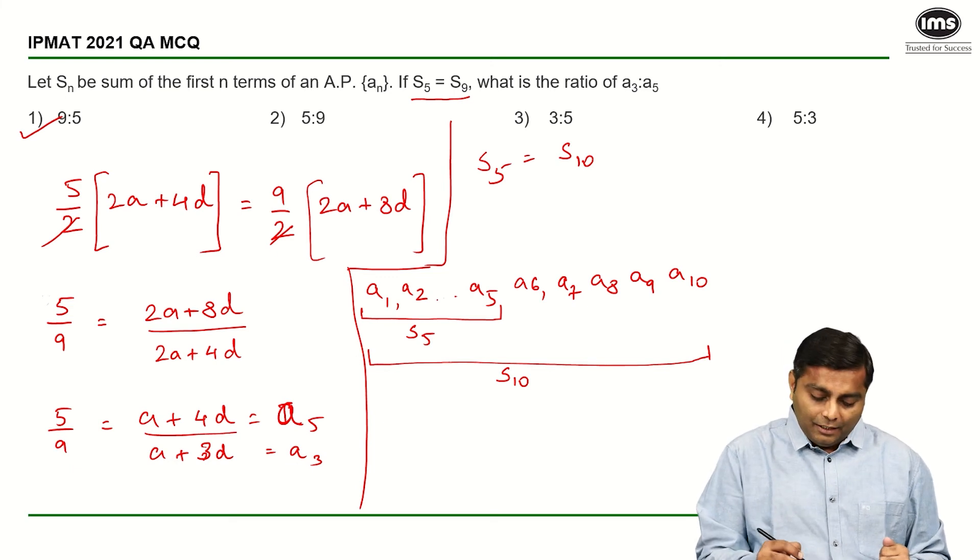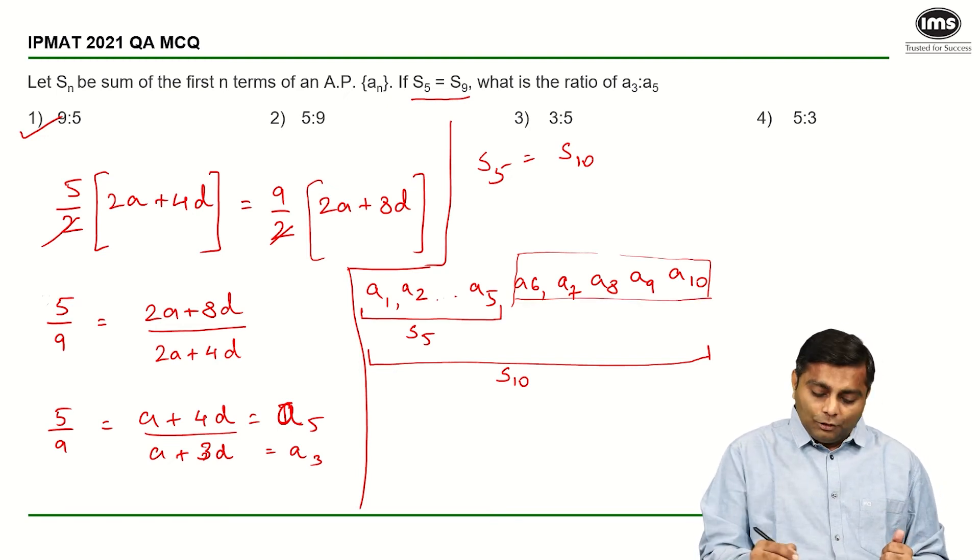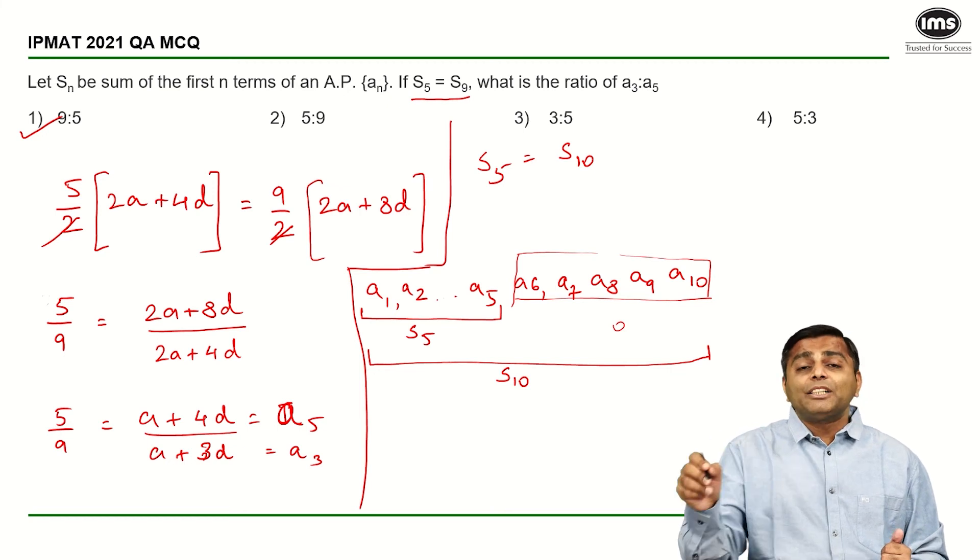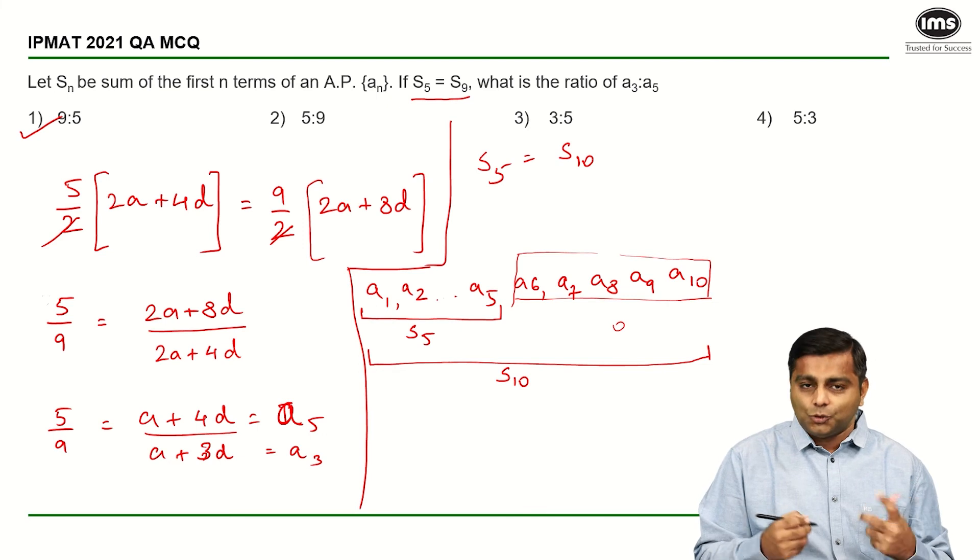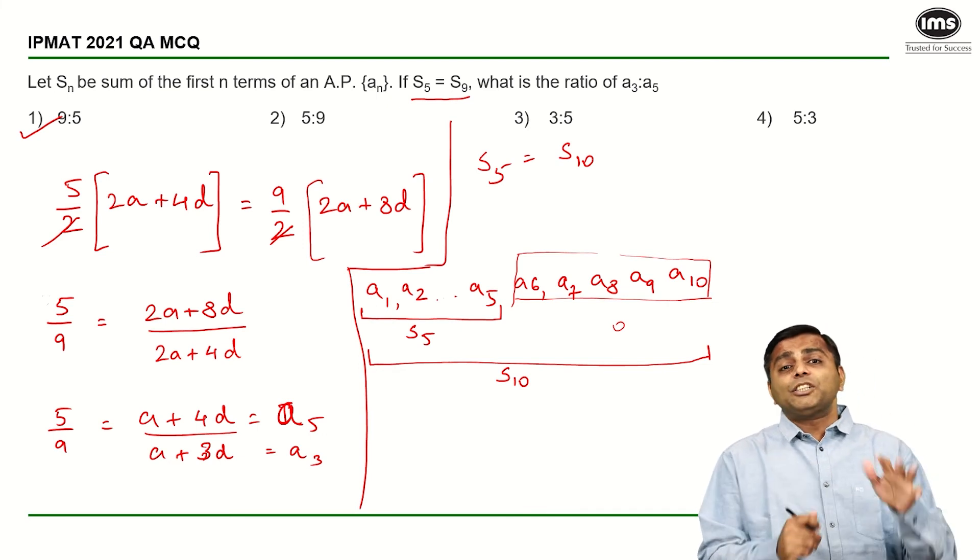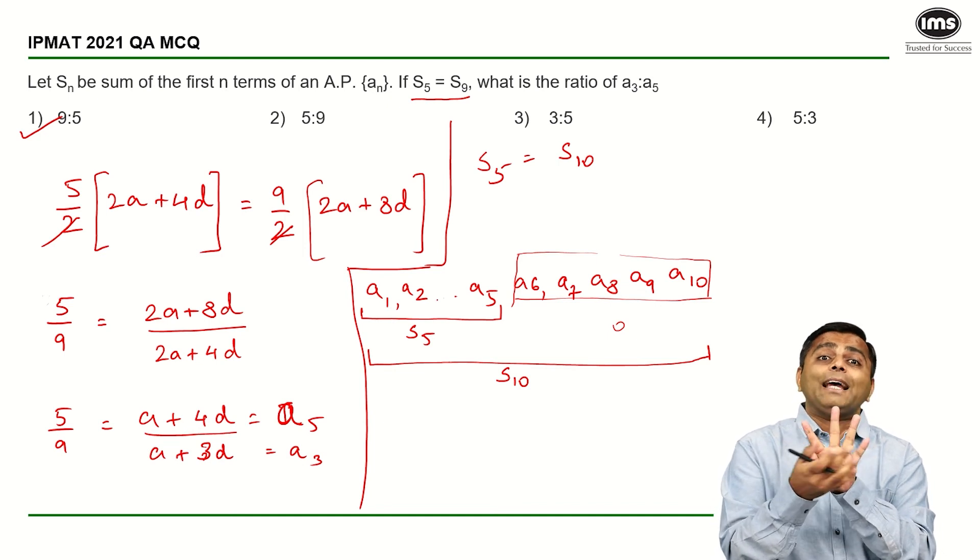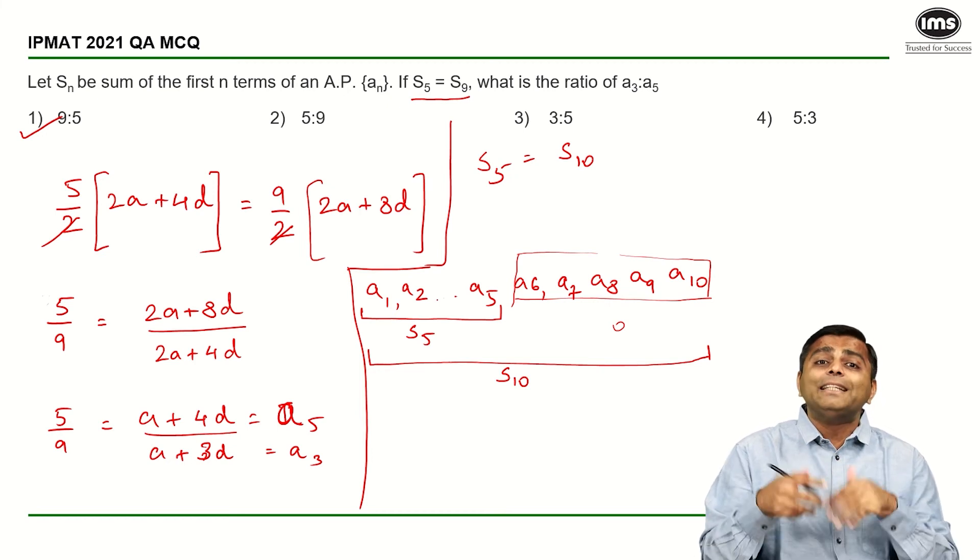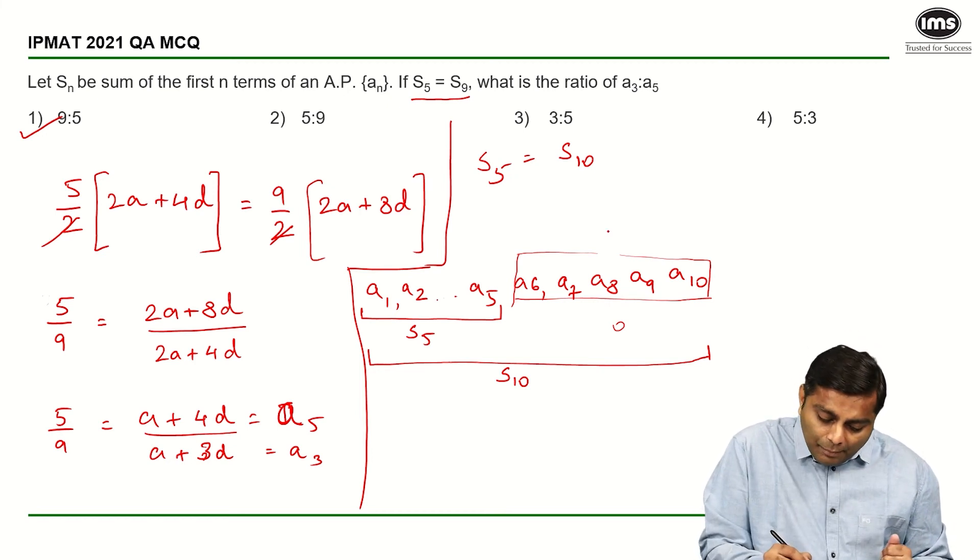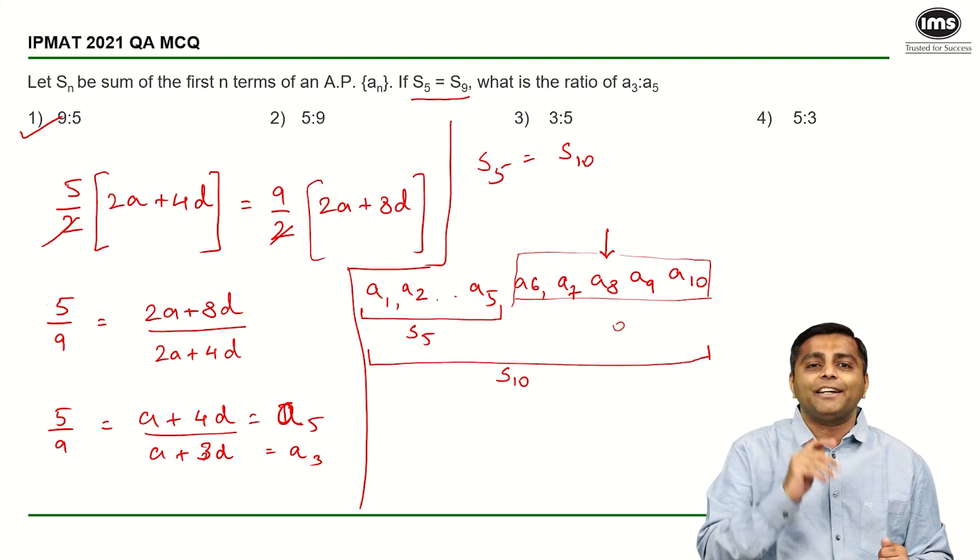They have said that S₅ is equal to S₁₀, which means that this part is not really adding anything. So this summation of this is 0. Summation of the next 5 terms from 6 to 10 is equal to 0. I hope that is understood. Now, if the summation of 5 terms of an AP is 0, which means these 2 terms have to cancel out these 2 terms. These 2 terms have to cancel out these 2 terms, only then the summation will be 0.